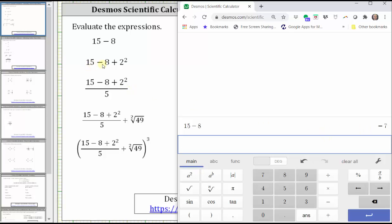The next expression is 15 minus 8 plus 2 squared, which means this expression is equal to the value of the previous expression, plus 2 squared.